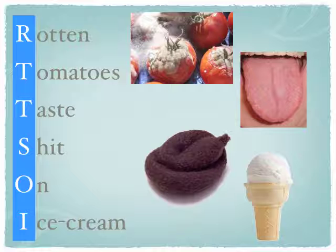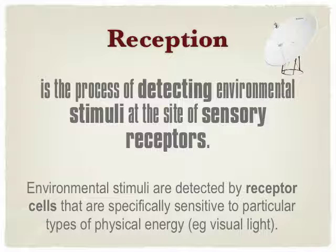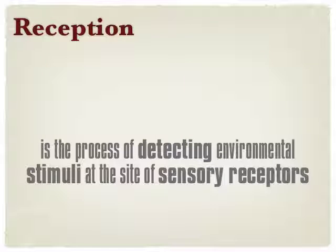The first one, R, is for reception. Reception is the process of detecting environmental stimuli at the site of the sensory receptors. It's about receiving light from the outside at the site of the photoreceptors in the back of the eye, in the retina. We have two main types of photoreceptors in the back of the eye: cones and rods.